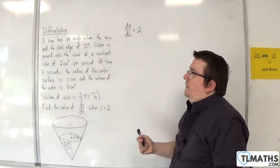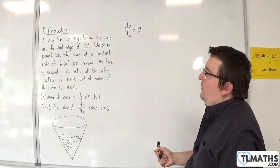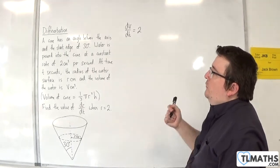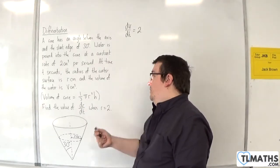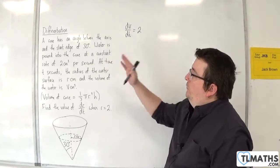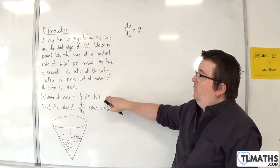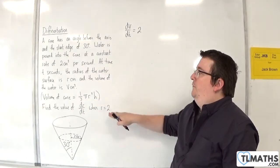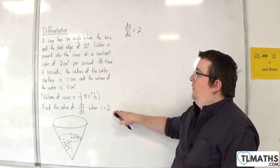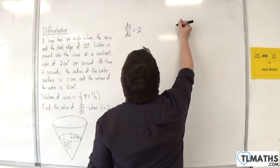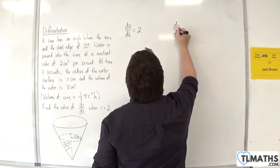At time t seconds, the radius of the water surface is r centimeters, and the volume of the water is v cubic centimeters. The volume of the cone is given by the formula one third pi r squared h. Find the value of dr by dt when r is equal to 2.